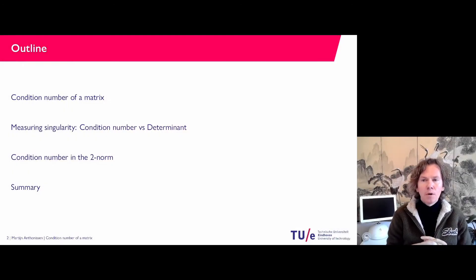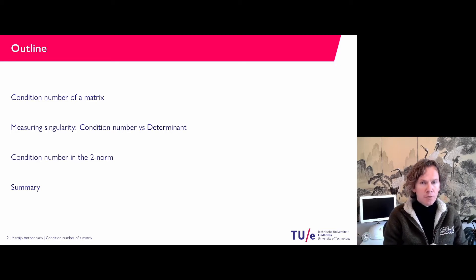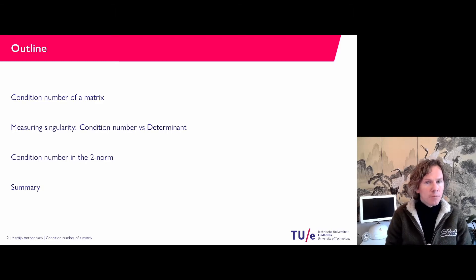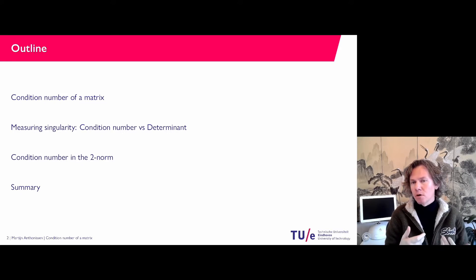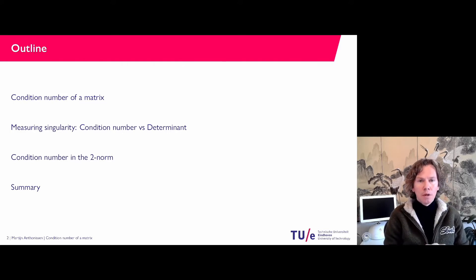I will also indicate that the condition number is a measure for whether a matrix is non-singular or not. You know from linear algebra that by doing exact arithmetic you can find out whether a matrix has an inverse by computing the determinant. It will become clear that the size of the determinant is not really a good indication for singularity of a matrix — the condition number is. And finally, for the 2-norm, the 2 matrix norm, we will give some formulas for the condition number.